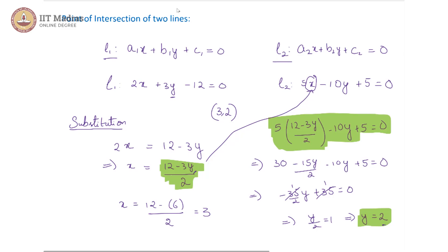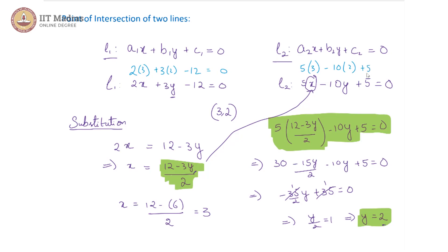We can verify this by substituting these values into the equations. For L1: 2 times 3 plus 3 times 2 minus 12 equals 6 plus 6 minus 12, which is 0. For L2: 5 times 3 minus 10 times 2 plus 5 gives 15 minus 20 plus 5, which is again 0. So it is fairly clear that (3, 2) is the solution which satisfies both linear equations.